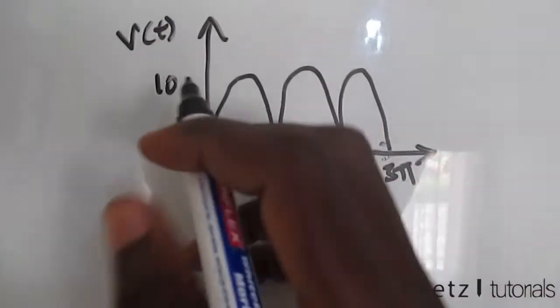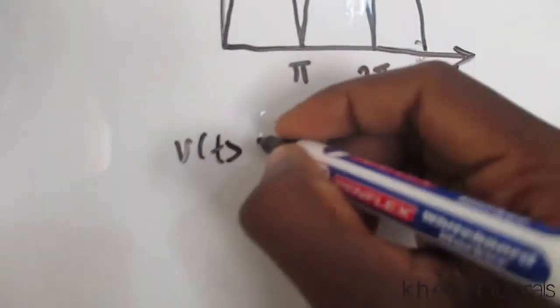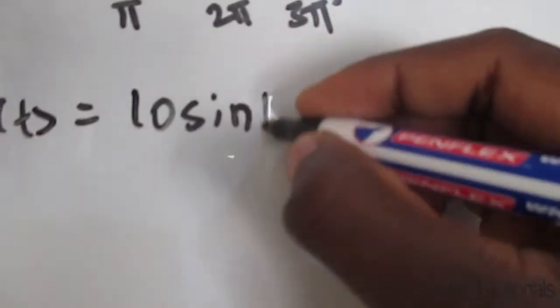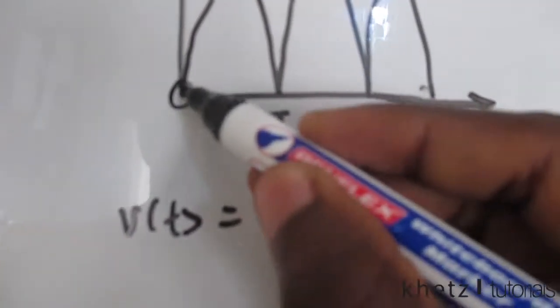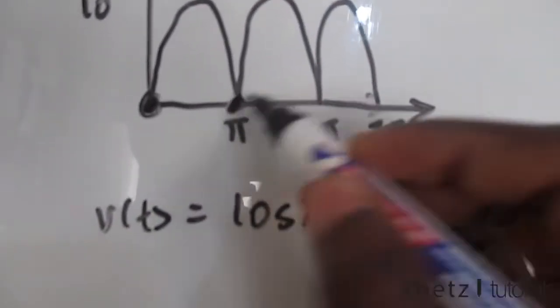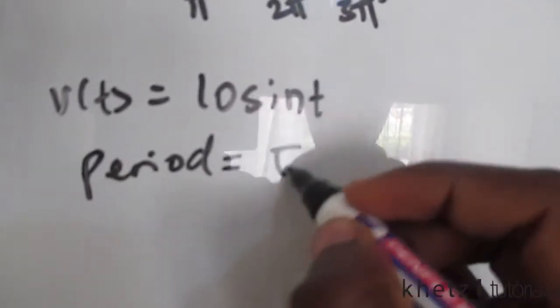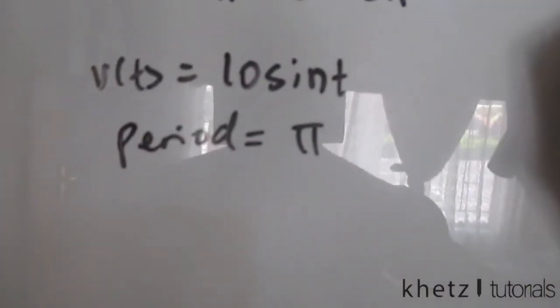This is a sine wave with amplitude of 10, so v of t equals 10 sine of t. If you look to get to this same point as you move along time, it takes pi, which means our period is pi.